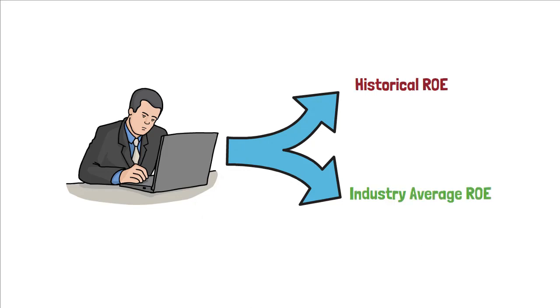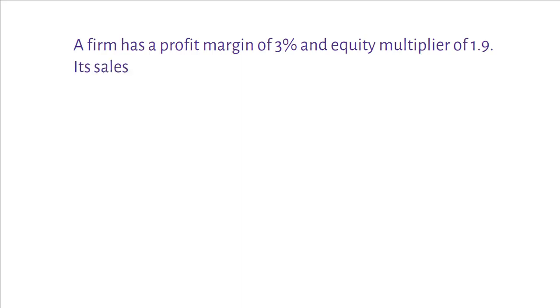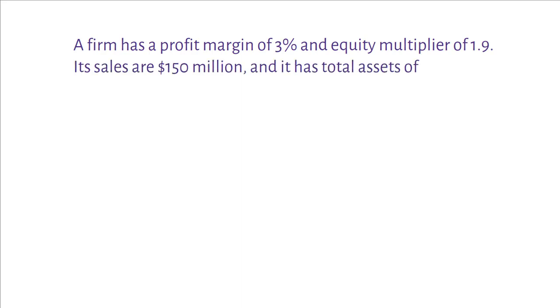Let's solve a numeric example. A firm has a profit margin of 3% and an equity multiplier of 1.9. Its sales are 150 million and it has total assets of 60 million. What is its ROE? Let's summarize what is given.